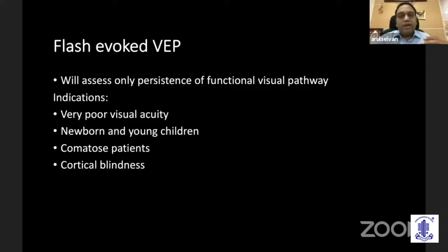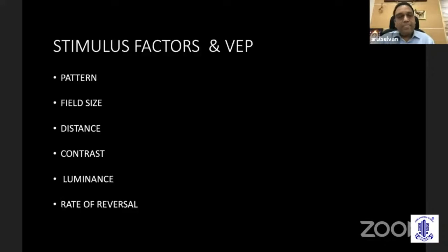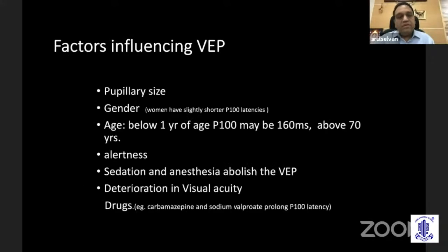Flash evoked responses are used when someone has very poor visual acuity and cannot cooperate or look at the visual pattern — as seen in newborns, young children, comatose patients, or cortically blind individuals. The latency differs from 100 to 150 milliseconds. The presence of flash evoked responses indicates some anatomical integrity, whereas absence indicates complete interruption of the anterior visual pathways. Stimulus factors also affect VEPs: pattern size, field size, distance of the patient, contrast, luminance, rate of reversal, pupillary size, age, and alertness all play a role. Sedation and anesthesia abolish visual evoked potentials.